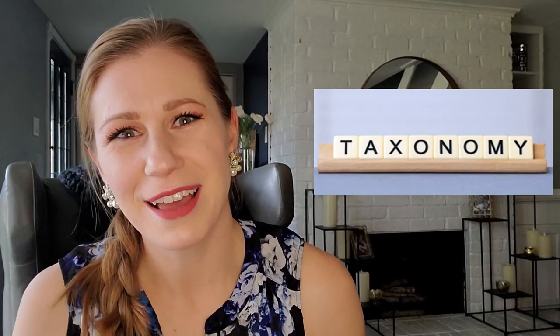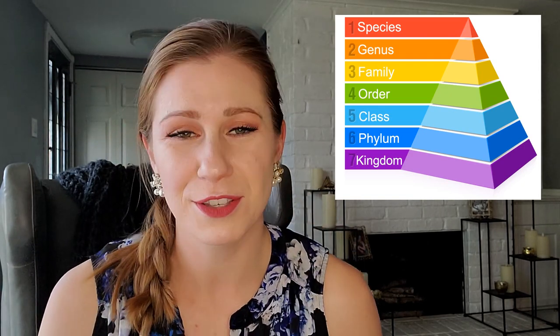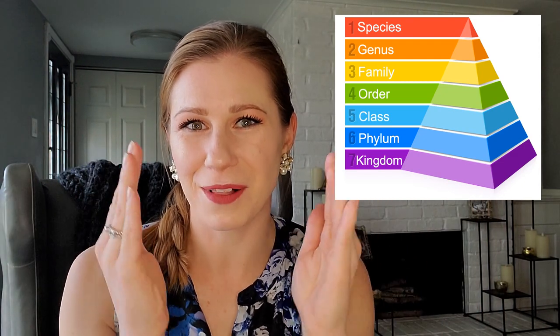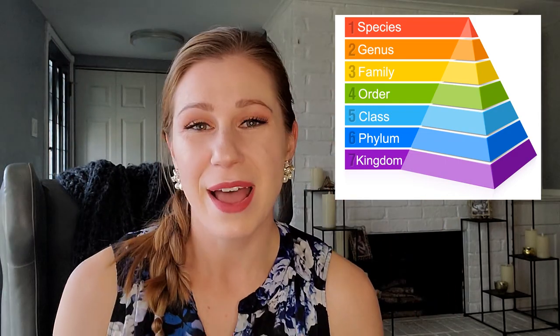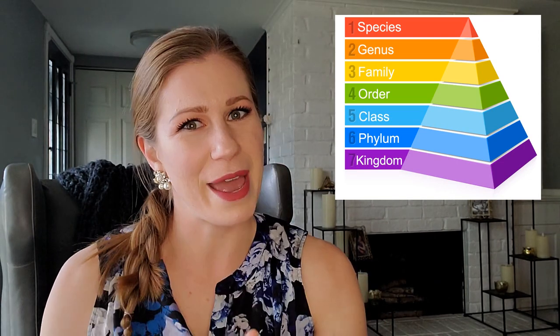Let's recap taxonomy. It is the branch of biology all about grouping and naming organisms, because we want to understand the world around us. Nowadays we use genetic similarities to help group these organisms. We divide them into groups called taxa, based on how specifically related they are to each other. There are several levels, starting with the most broad — domain — going down through kingdom, phylum, class, order, family, genus, and the most specific, species. To remember the order, there's a handy mnemonic device.